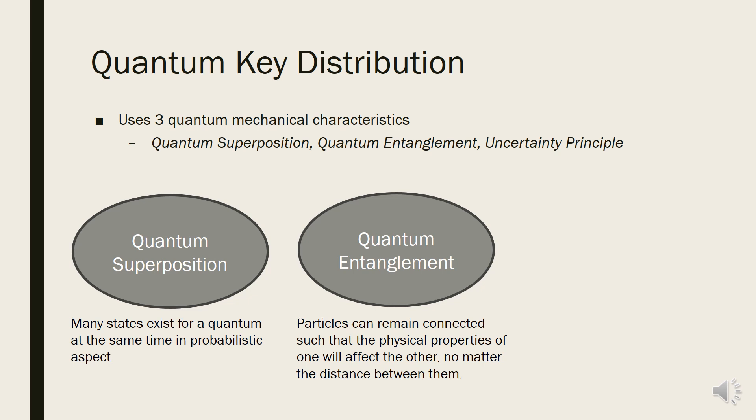Second, quantum entanglement means that two particles which have been broken out of one particle have a relation, so if one particle changes its state, then the other one's state is changed at the same time, even though they are far away from each other.